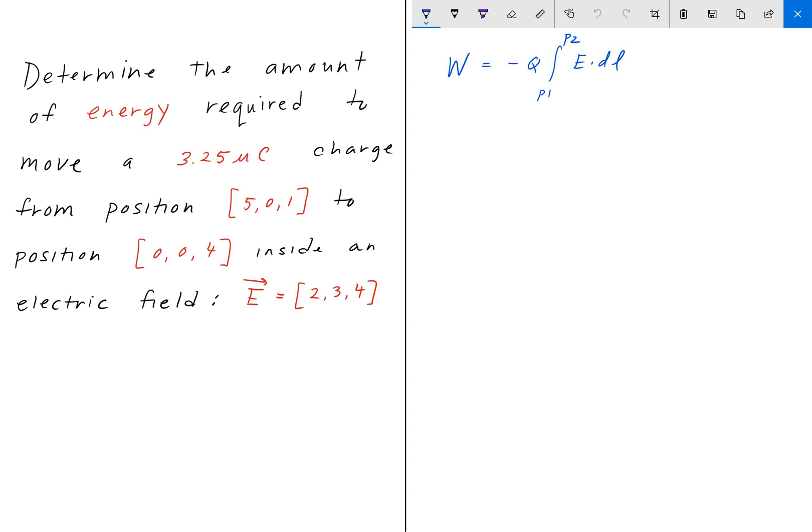So, here we have the definition of work, and the units of work is joules. So, solving this equation here, this is equal to minus Q E dot L, where L is going to be the final position minus the initial position. So, P final minus P initial equals the final position (0,0,4) minus the initial position (5,0,1). And therefore, we get negative 5, 0, 3, as our L.